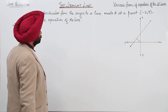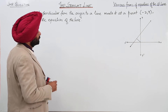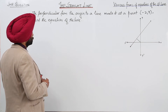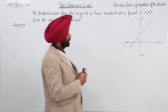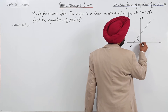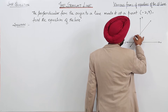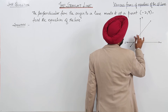The perpendicular from the origin to a line meets it at a point minus 2, 9. Find the equation of the line. I have drawn a figure here. Let this point be O, this point be P, and the coordinates of point P are minus 2, 9.